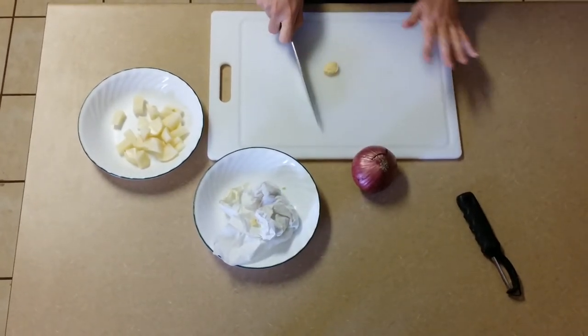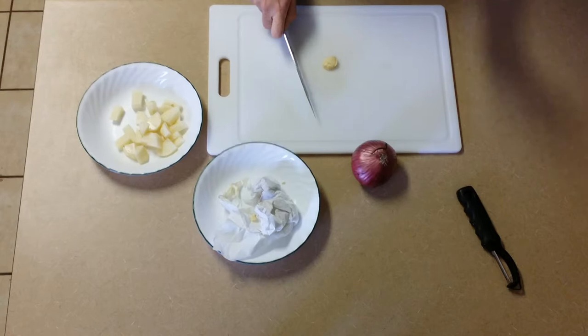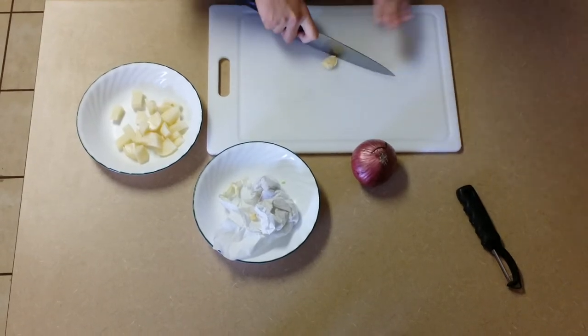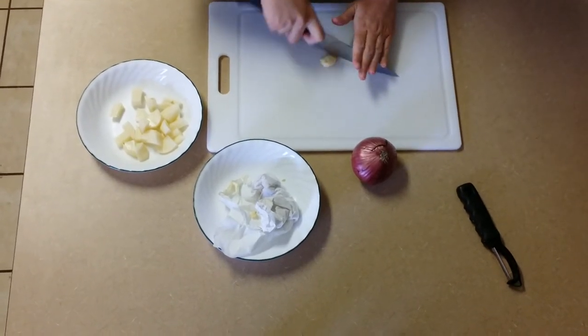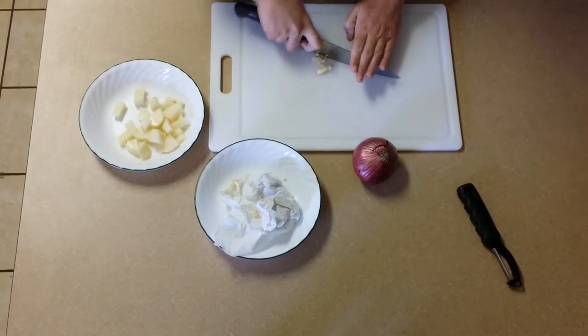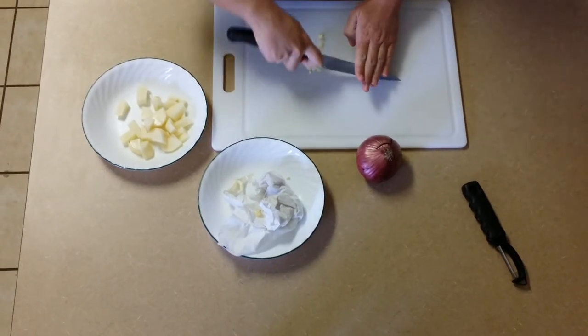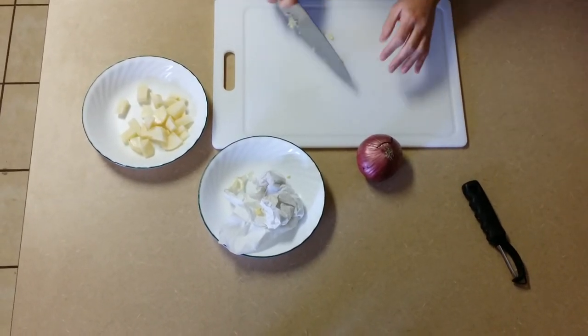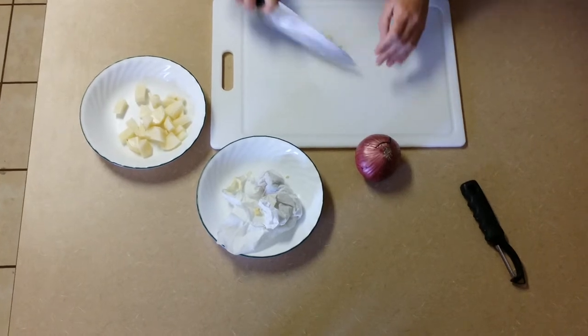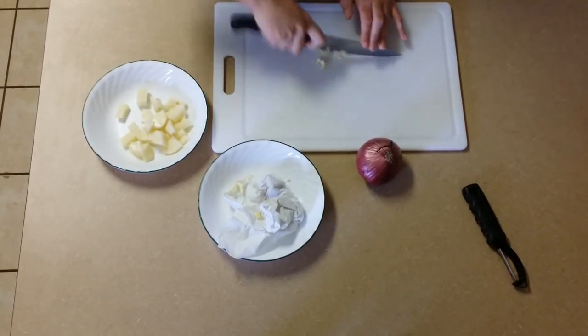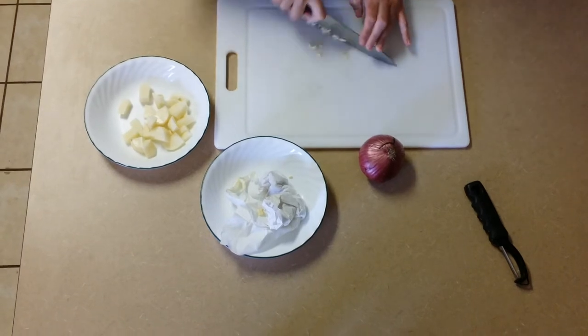This is the easiest kind of chopping. Anyone can do it. Anyone can look like a pro in a matter of seconds. You take your blade, put your other hand on top, and you move your blade back and forth on the table. The tip of your knife will always stay on the cutting board.